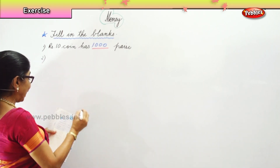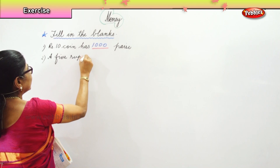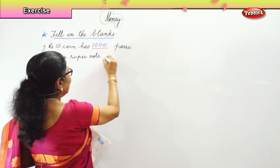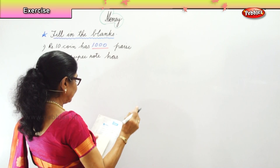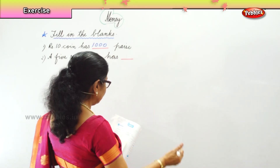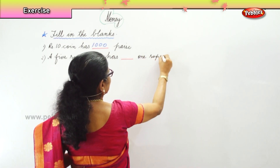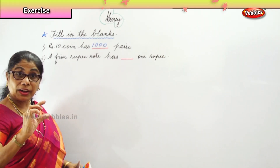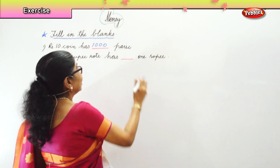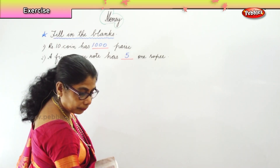Next: a 5 rupee note has dash 1 rupee. I am giving you a 5 rupee note — how many 1 rupees are in it? Give me the answer. 5. Good.